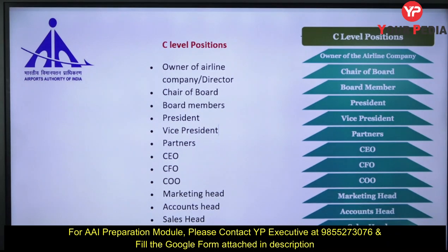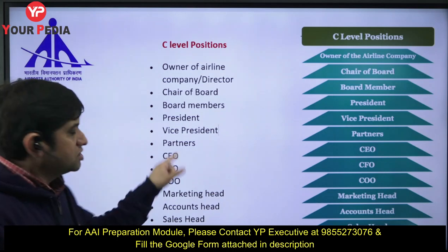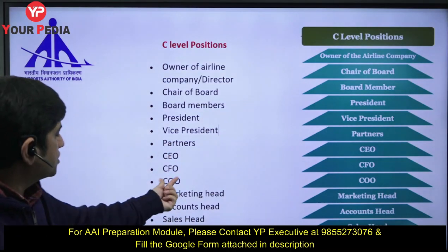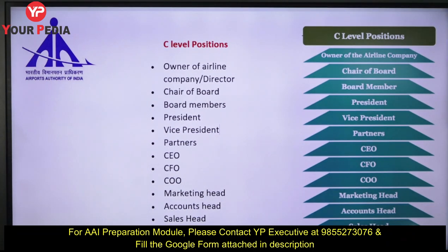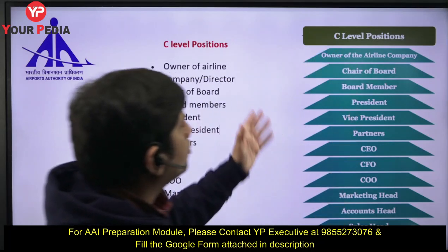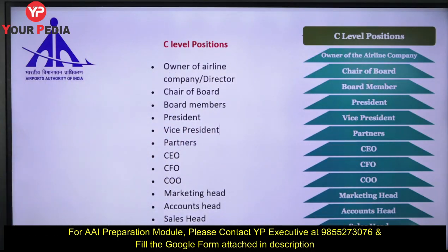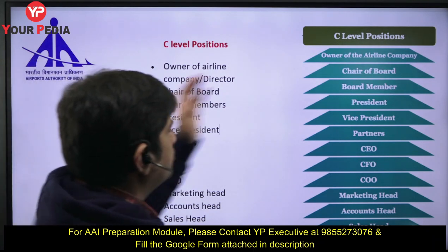At C-level positions you will find the owner of the airline company, director, chairman of the board, board members, president, vice president, partners, CEO, CFO, COO. CEO is chief executive officer, CFO is chief financial officer, COO is chief operating officer. These terms look similar but they are not the same — there is a difference. Marketing head, account head, sales head, human resource director are also basically C-level but high-level positions.